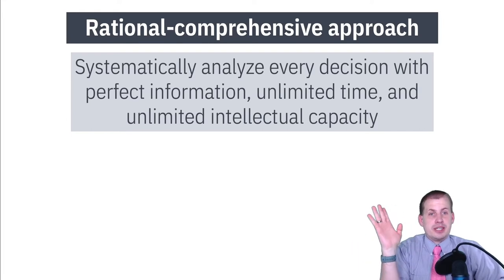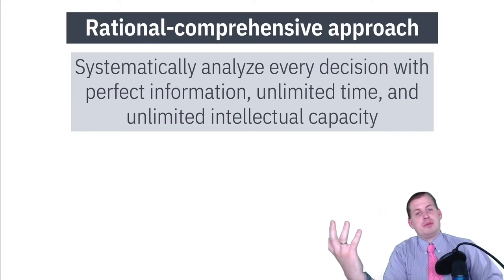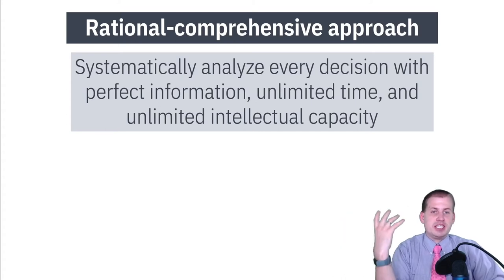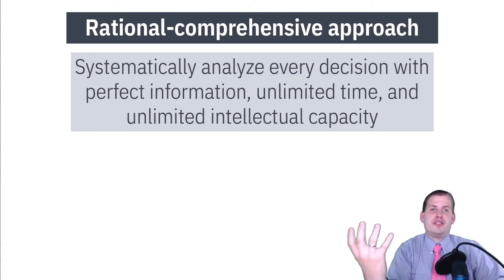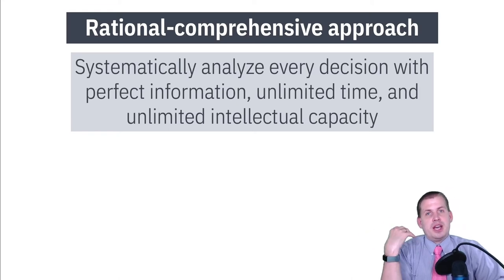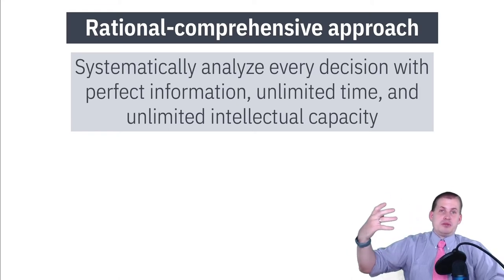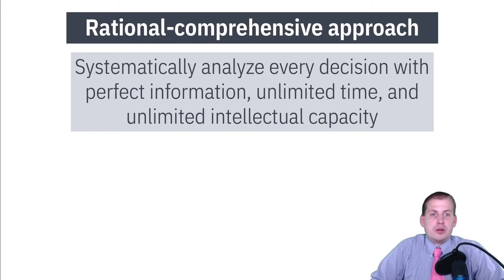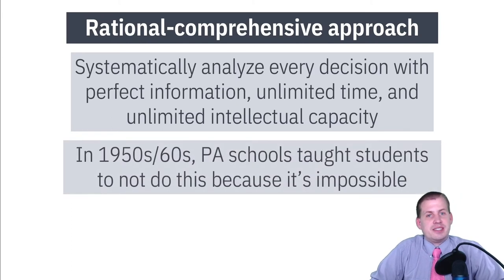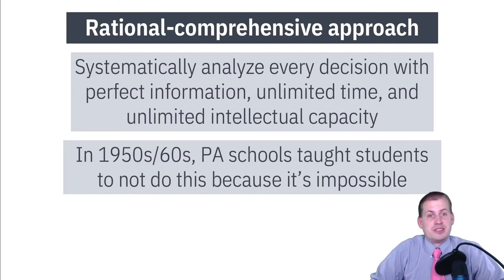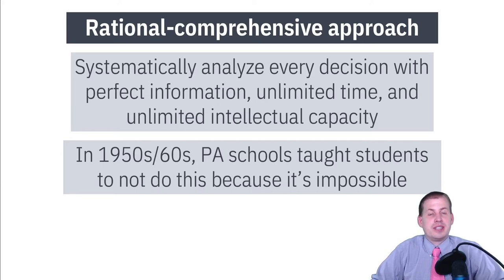The rational comprehensive approach was born out of management science when MBAs and MPAs were first invented. Scholars believed there was a way to scientifically measure every managerial decision — you make the best decision using unlimited time, unlimited intellectual capacity, and unlimited resources to figure out perfect information about every single decision. Even back in the 1950s and 60s, public administration and MBA schools taught students not to do this because it's impossible and totally infeasible.